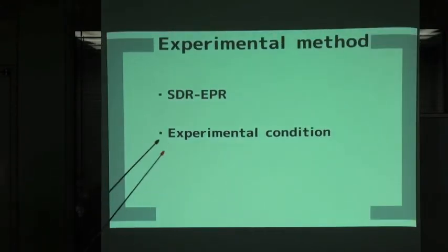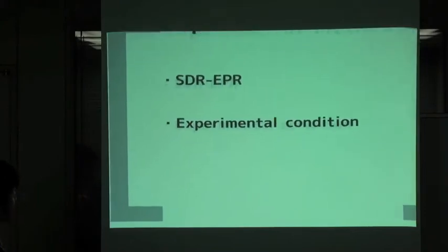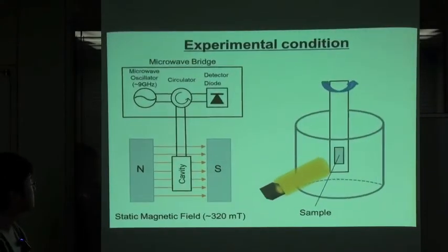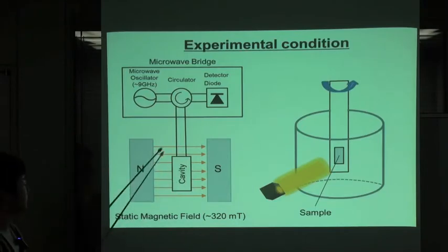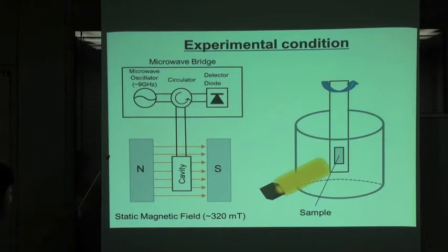I will explain the experimental condition. The left figure is the outline of the equipment. The microwave is transferred through the waveguide and stored in the cavity. The sample is set in this cavity, and the static magnetic field is applied.